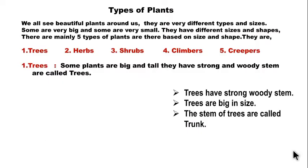So we are going to learn types of plants first. We all see beautiful plants around us — they are of very different types and sizes. Some are very big and some are very small, with different sizes and shapes. There are mainly five types of plants based on size and shape: trees, herbs, shrubs, climbers and creepers.